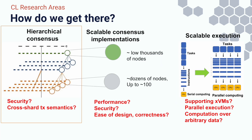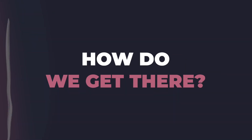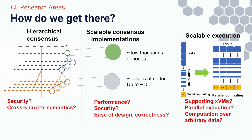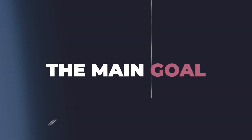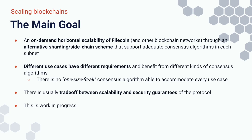This makes it difficult for a single blockchain network with a single consensus protocol to accommodate any type of Web3 application. In this work we are considering hierarchical consensus to reach that scalability goal. The main goal is on-demand horizontal scalability of Filecoin using a sidechain scheme that can run arbitrary consensus protocols that fit the security requirements for a given subnet.